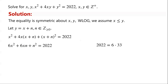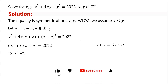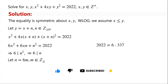As 2022 equals 6 times 337, so 6 divides 2022. This implies that 6 divides n squared, that is, 6 divides n. So we let n equal 6m, where m is a non-negative integer.